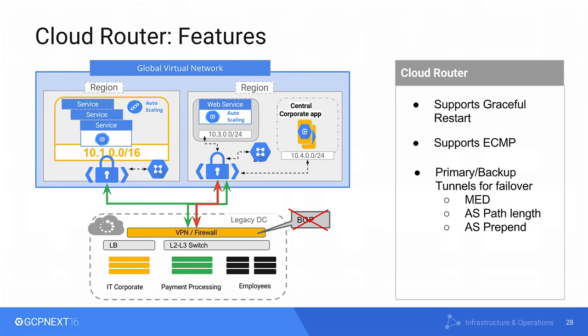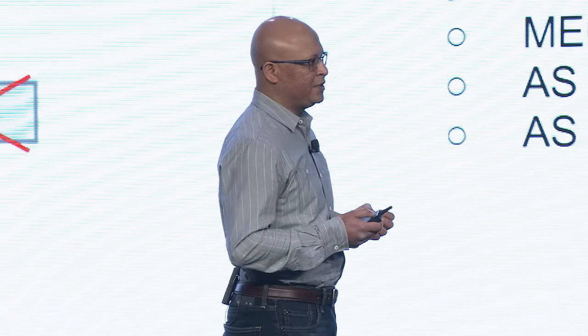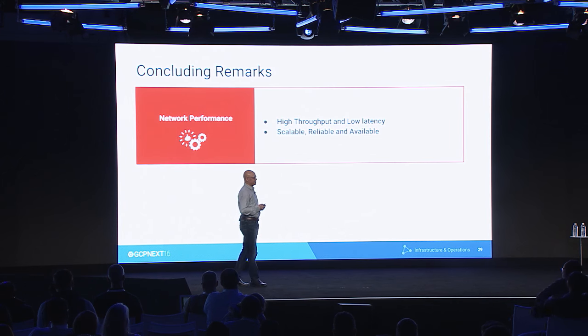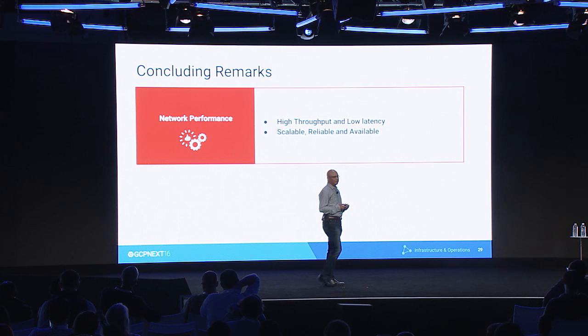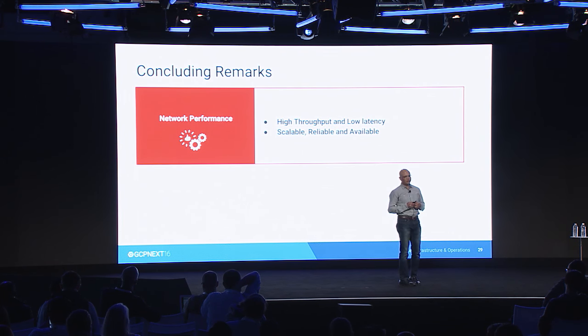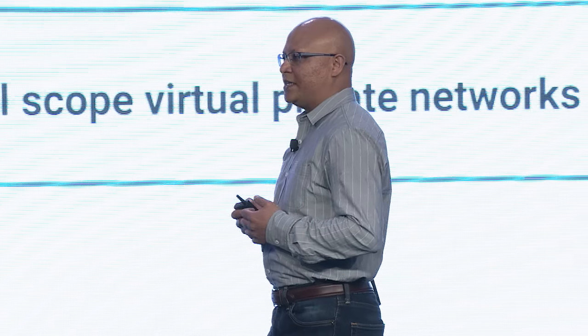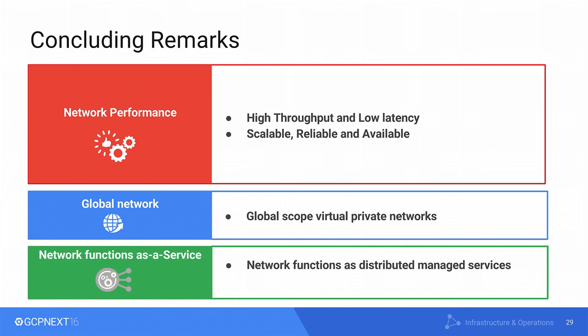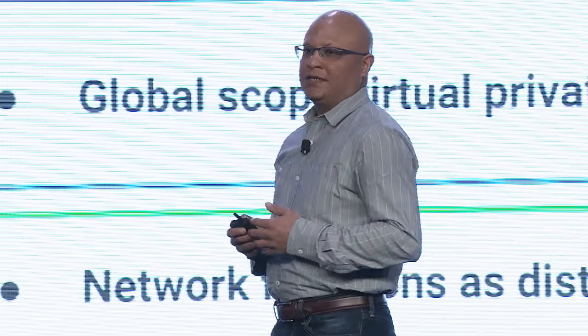We have seen how Google managed services like Cloud Router and Cloud VPN make it really simple to provision a secure connection to GCP with auto-discoverable networks. To conclude this talk, I will recap why GCP. First and foremost, it's about network performance — GCP delivers high throughput and low latency. It is highly scalable, reliable, and always available. It provides a global network with virtual private networks that span globally across all regions. And last but not least, it provides managed services like Cloud VPN, Cloud Router, Cloud DNS, and many more as virtualized network functions for high scalability and availability. With that, I conclude this talk. Thank you.